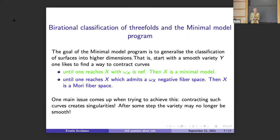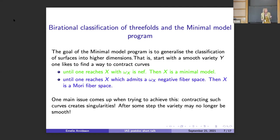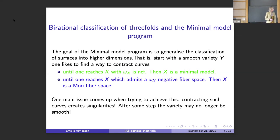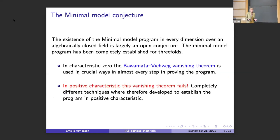The minimal model program is the name for the ambition of generalizing the birational classification of surfaces to higher dimensions. The goal is to contract curves in a way so that you either get a minimal model, characterized by the canonical sheaf being nef, or a Mori fiber space, characterized by a fibration which is anti-ample with respect to the canonical sheaf. If you want to do this from dimension three onwards, there is a main issue: even if you can contract the curves you want to contract, you are going to get singularities. These are the singularities that naturally appear in this program.